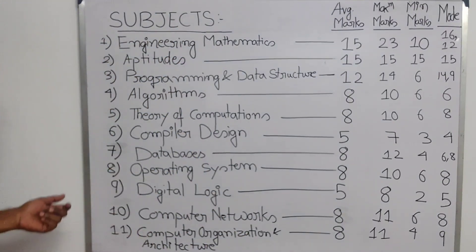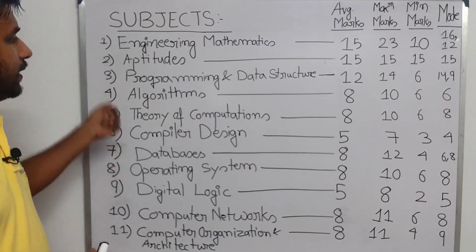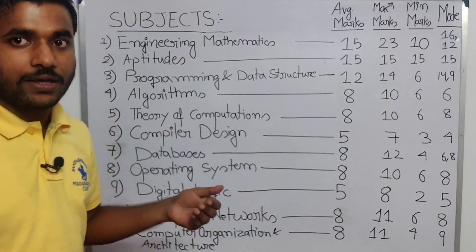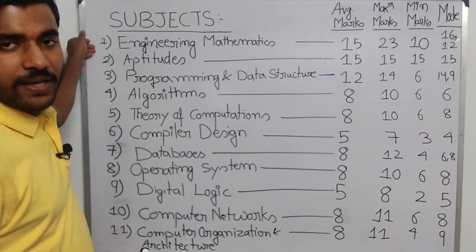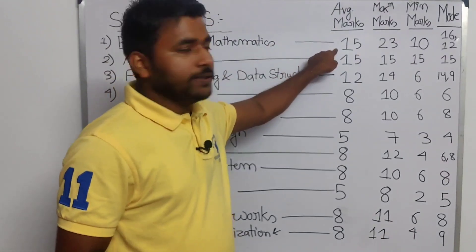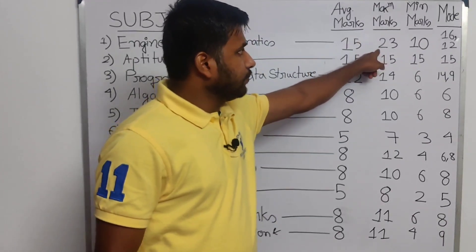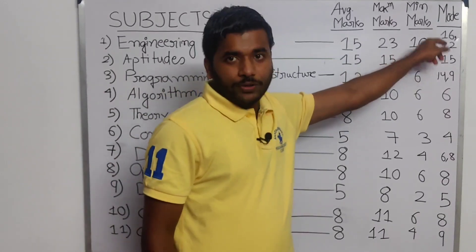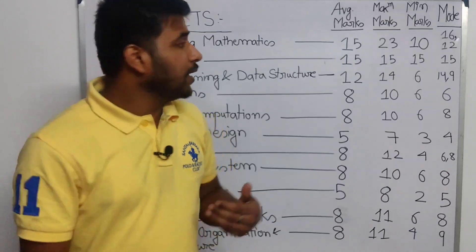I have written the subjects in the order that we should study them — in priority order, first subject then second subject, and so on. The first subject I have written is Engineering Mathematics. It is very important because the average marks of Engineering Maths is 15, and the maximum marks they have given in Engineering Maths is 23.